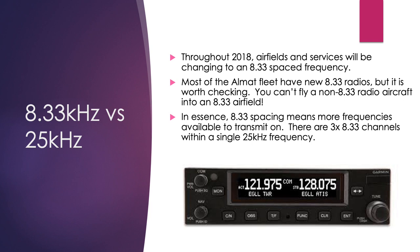Different radios have different spacings between each individual frequency. It used to be 25 kilohertz between each frequency. However, throughout 2018 airfields and services changed to the 8.33 spacing, which effectively tripled the number of channels available to transmit and receive on, increasing capacity. With that change, the physical radio units inside the aircraft had to be updated to accommodate the new 8.33 spacing.